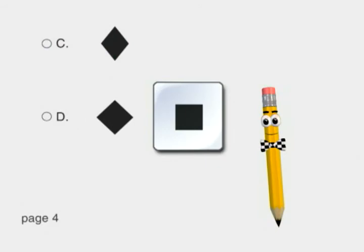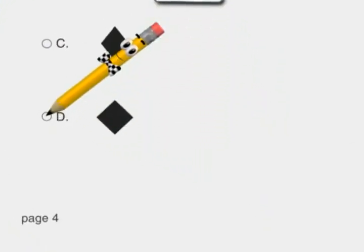But shape D is a square of the same size turned on its corner. So the answer is D.